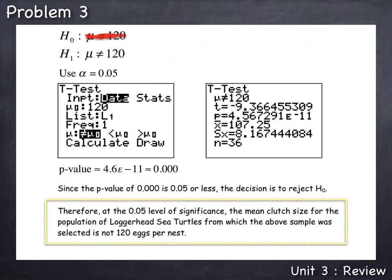Therefore, at the 0.05 level of significance, the mean clutch size for the population of loggerhead sea turtles from which the above sample was selected is not 120 eggs per nest.